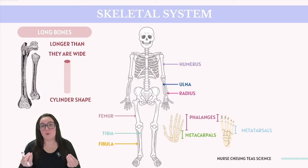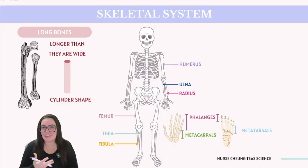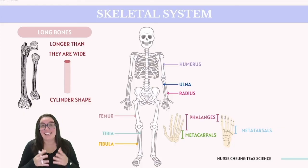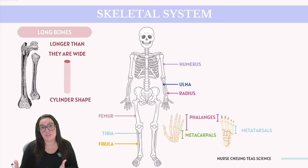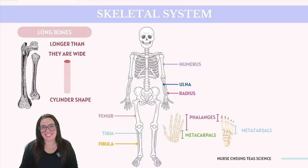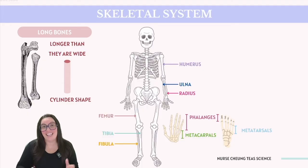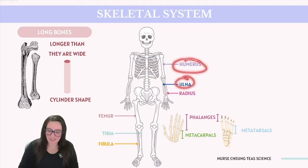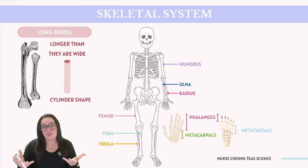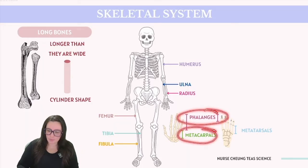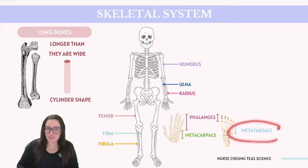Next up, we're going to dive into bone shapes and how we classify them. Starting with our long bones — this term doesn't necessarily refer to their length in the most literal sense. Instead, it's more related to that cylindrical shape and the fact that they are longer than they are wide. These bones are typically involved in movement facilitated by muscle contractions. Examples of long bones include our femur, which is the prominent long bone found in our leg, as well as our tibia and our fibula. In our arms, we have the humerus, the ulna, and our radius. And within our hands and our feet, we have the phalanges, the metacarpals found in our hand, and the metatarsals found in our feet.